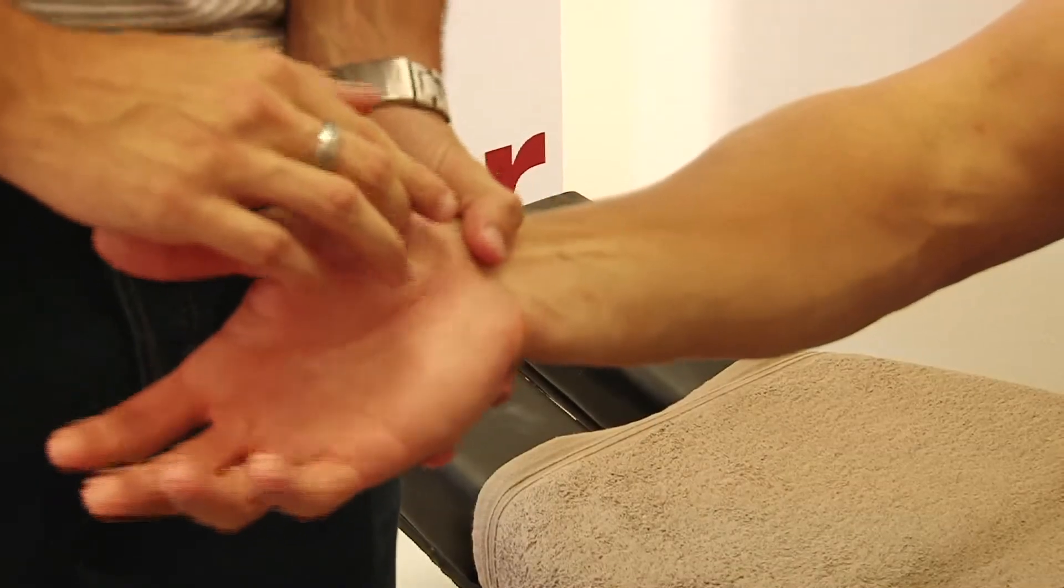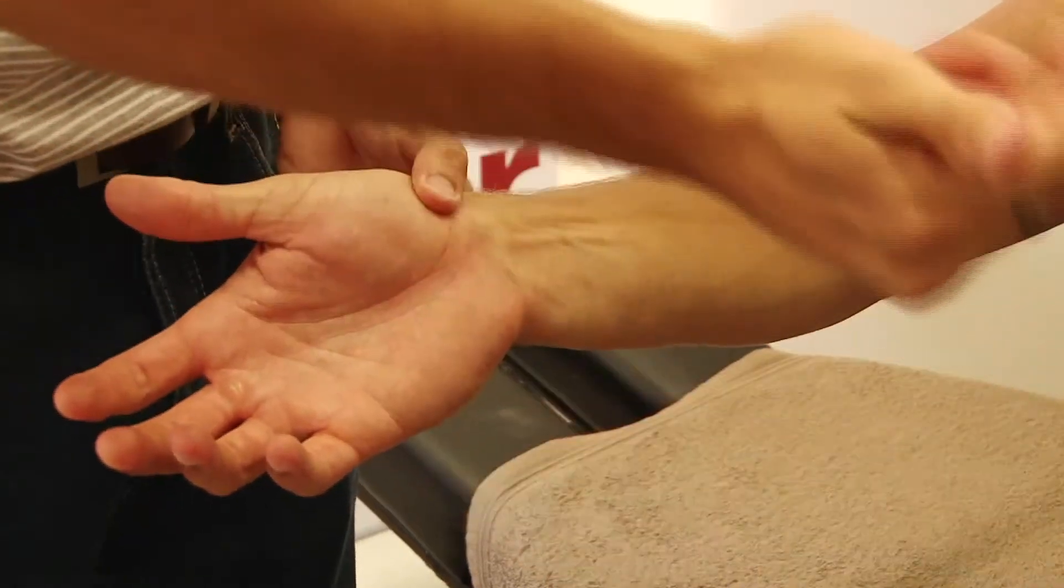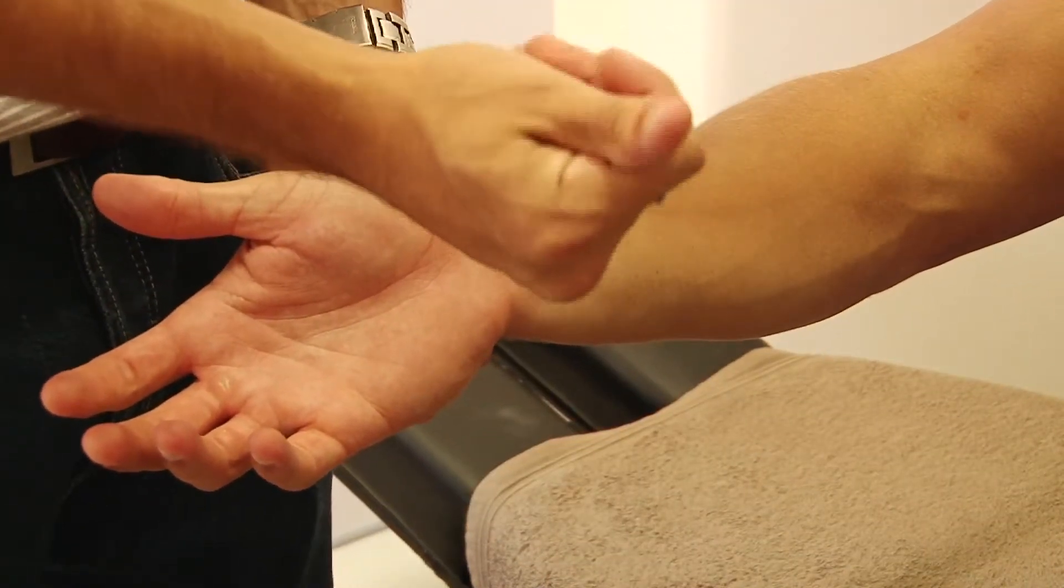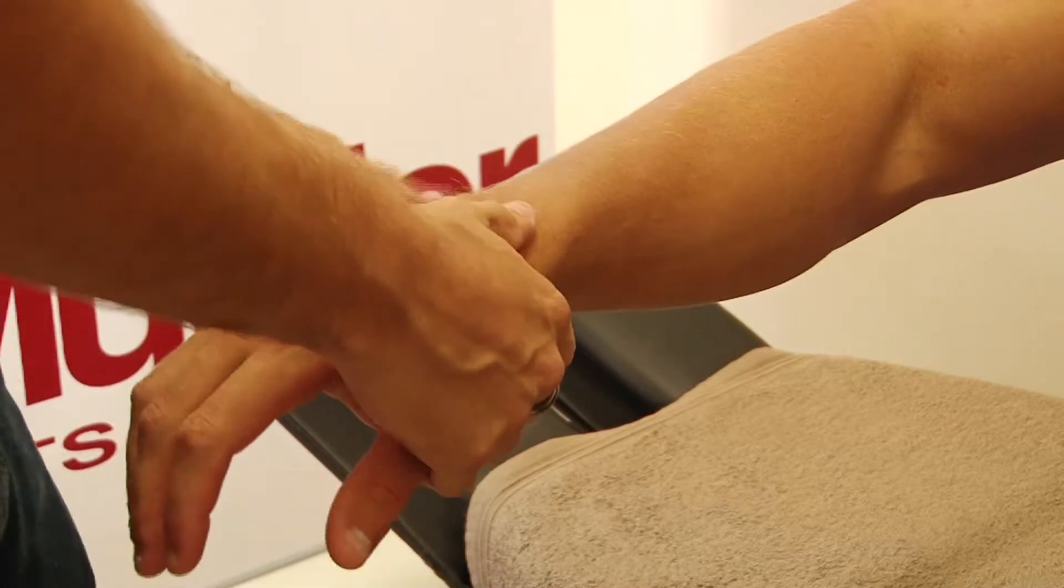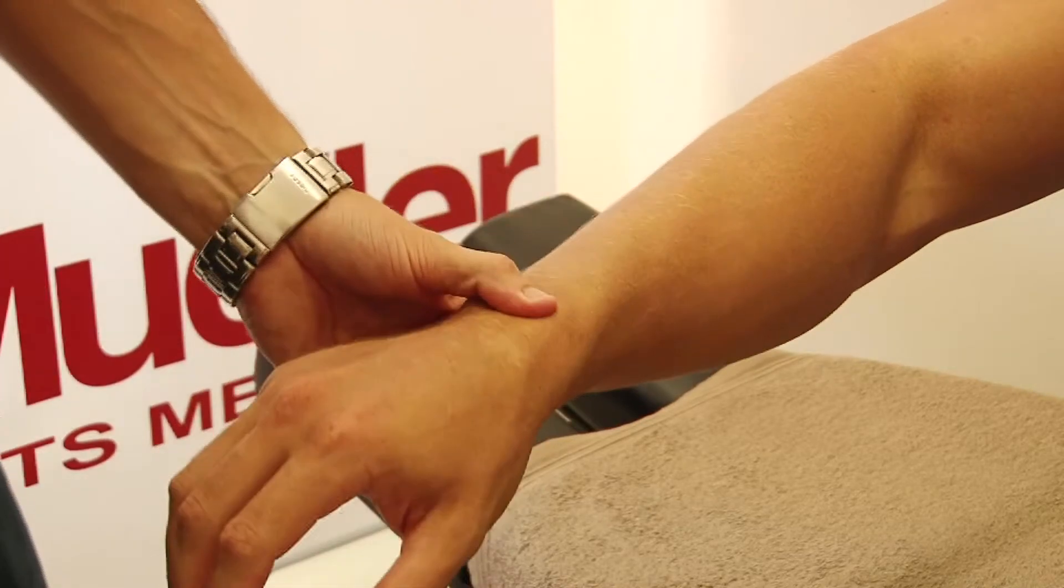Next thing we're looking at, there's a scaphoid bone that normally happens when a patient falls with an extended hand and it gets quite a hard impact to the area. You've got to be careful of scaphoid fractures.